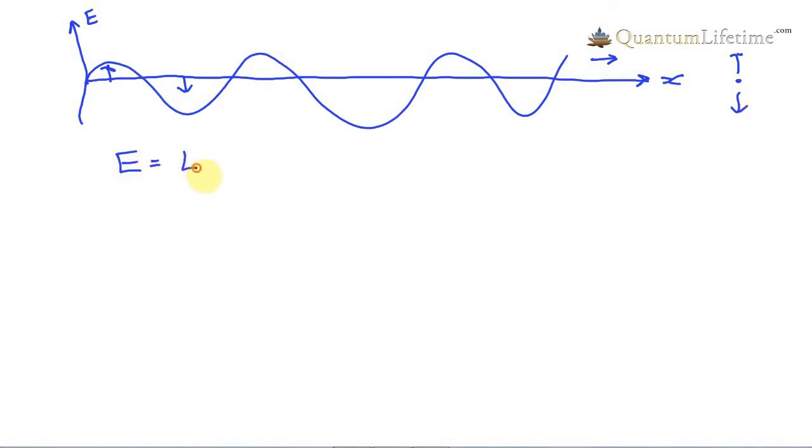It's equal to the peak electric field strength, which I'll call E naught, times sine kx, where k is a constant called the wave number, minus omega t. And omega is a constant called the angular frequency.